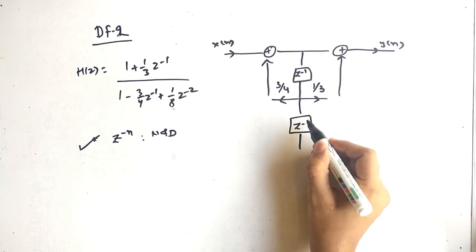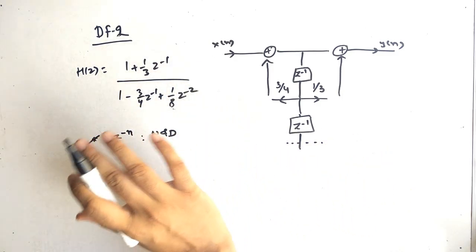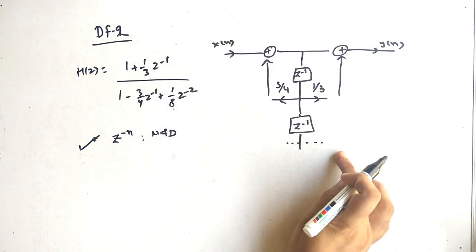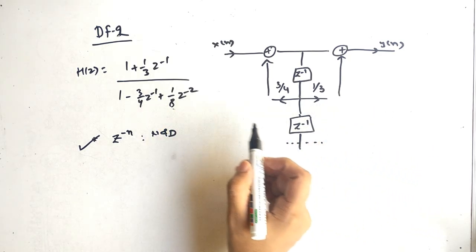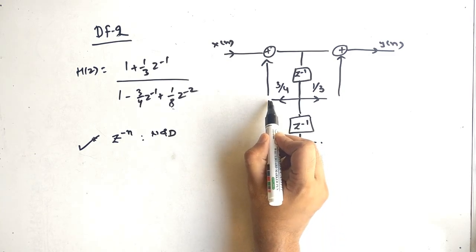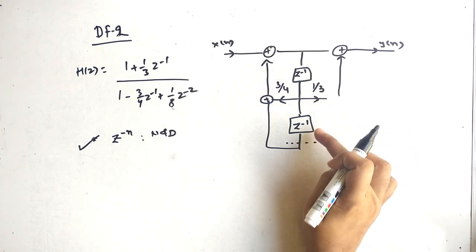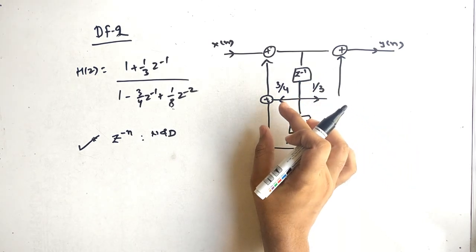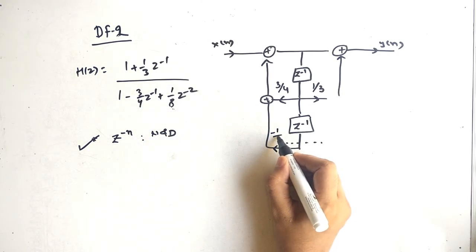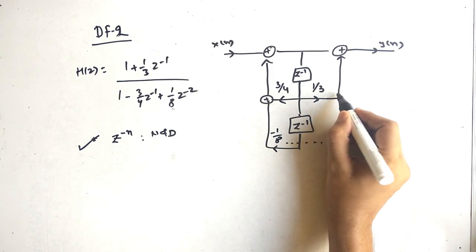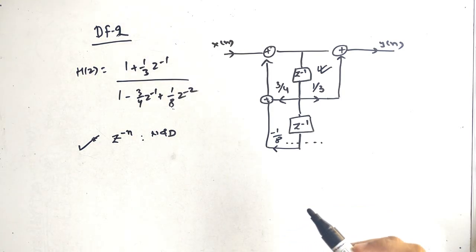For the z⁻² delay term: in the zeros there is no z⁻² term, so this will not be present in direct form 2. Now for the pole, we have 1/8. There is an addition sign here because we have two terms — z⁻¹ and z⁻² — and we will add both here. The coefficient is 1/8, so the negative of the coefficient is minus 1/8. This is the final direct form 2 answer, where we have reduced the delay terms.